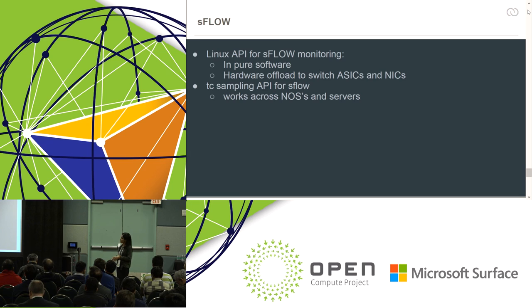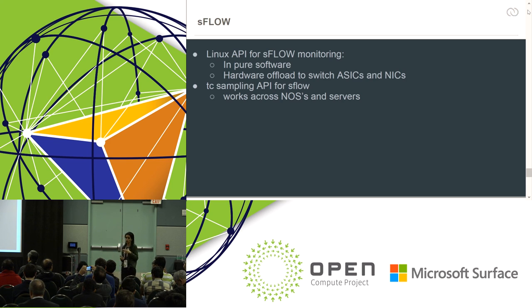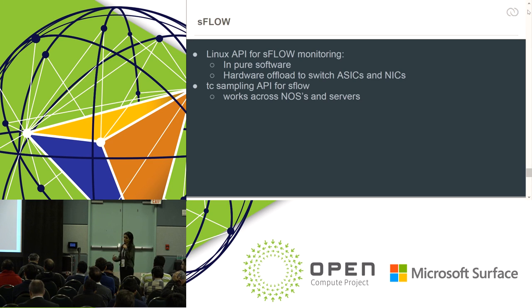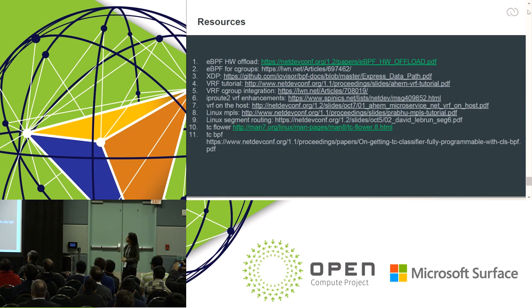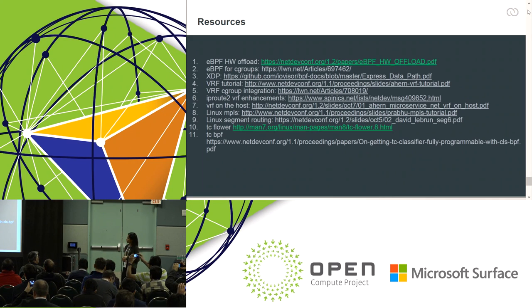sFlow is here as another collaboration example between us, others in the Linux networking community, and the sFlow community. sFlow had been carrying patches for every other distribution and hardware, and they were looking for a single Linux API to sample packets consistently in software and hardware. We now have a TC sampling API working with Mellanox. The sFlow application hsflowd will soon receive a patch to use this API. The resources slide contains links to papers from the NetDev conference covering all these topics.